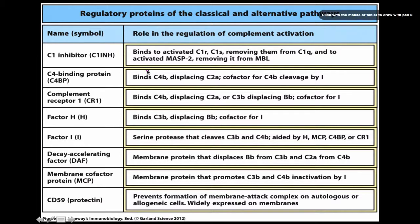I've talked about complement control proteins and complement regulation, covering each except a select few. CR1 is going to bind to C4β displacing C2α — remember that's the same as Factor B — or C3β displacing the Factor B cofactor for Factor I. C4 binding protein (C4BP) binds to C4β displacing C2α, acting as a cofactor for C4β cleavage by Factor I.